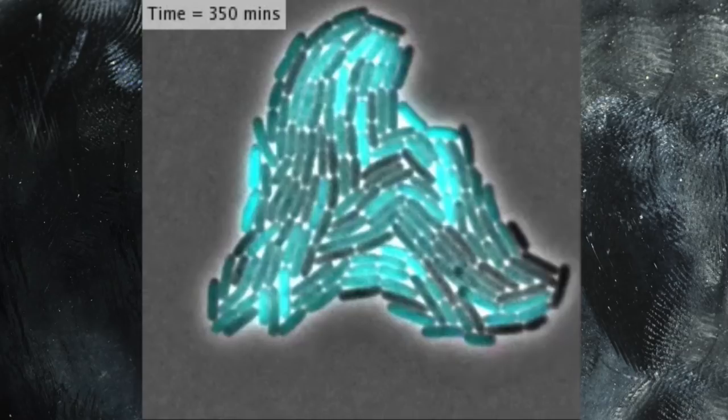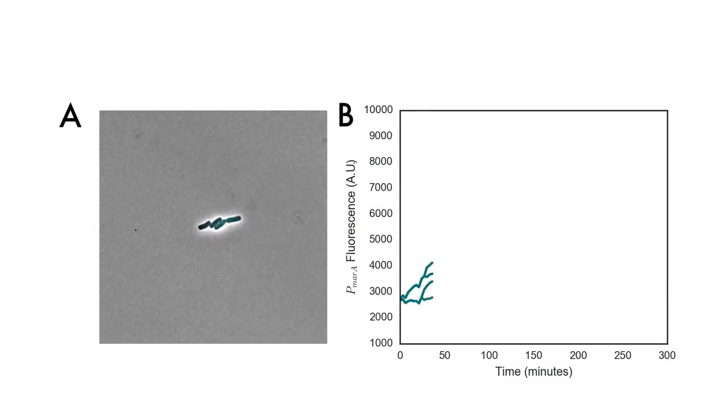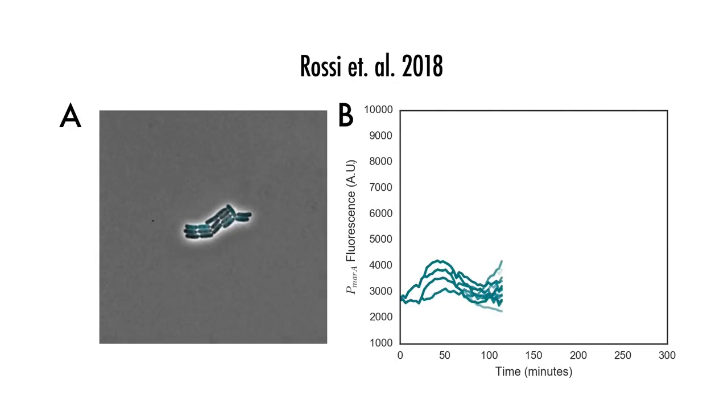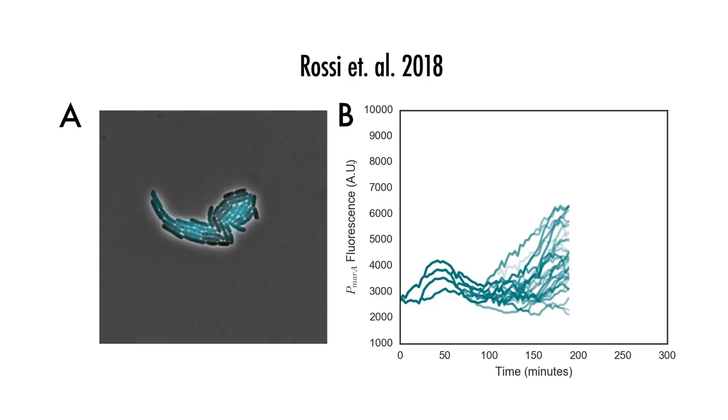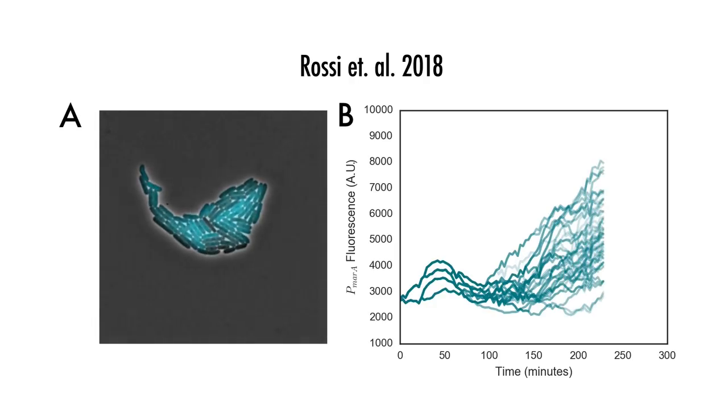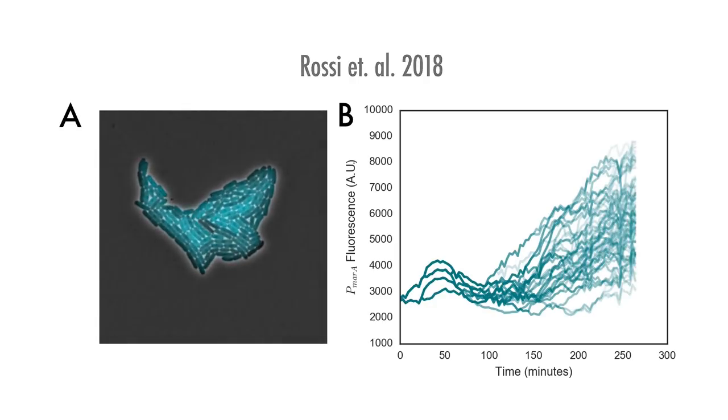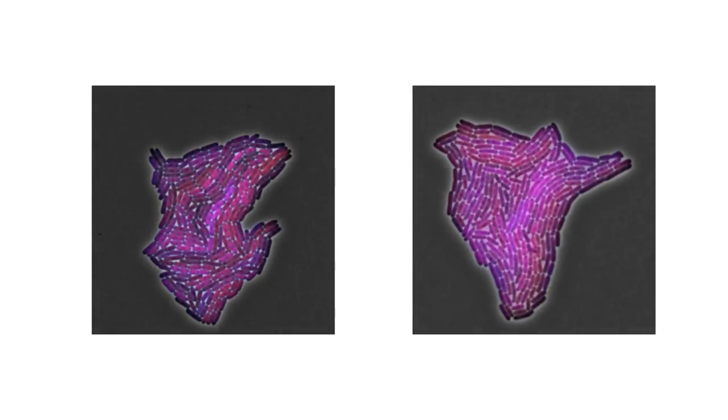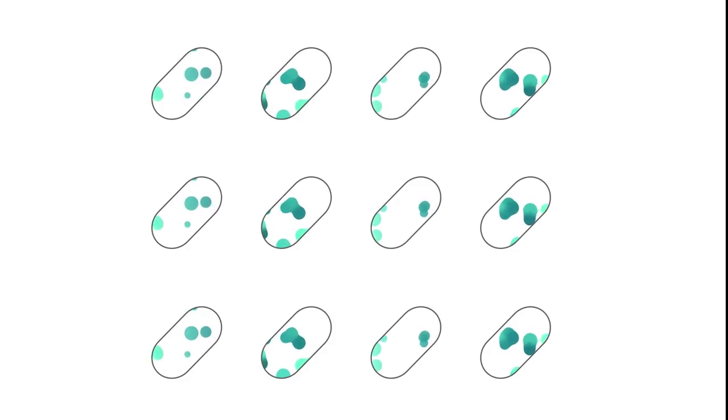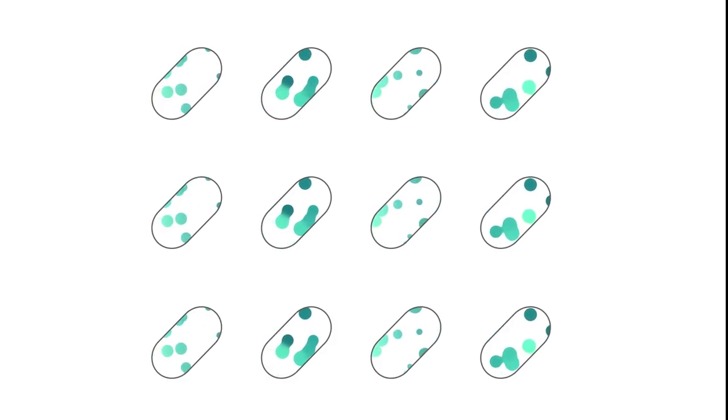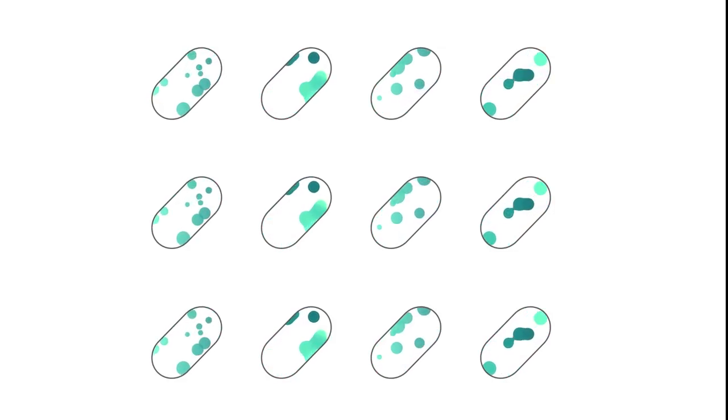More than just the pretty movies, this method can create important quantitative information. On the left, we see a growing microcolony, and on the right, using computer vision, we've extracted the mean fluorescence values of each cell to show how they diverge over time. This method is not limited to a particular gene or even one gene at a time. All genes express a degree of stochasticity. But just because all genes are expressed stochastically doesn't mean it necessarily matters.